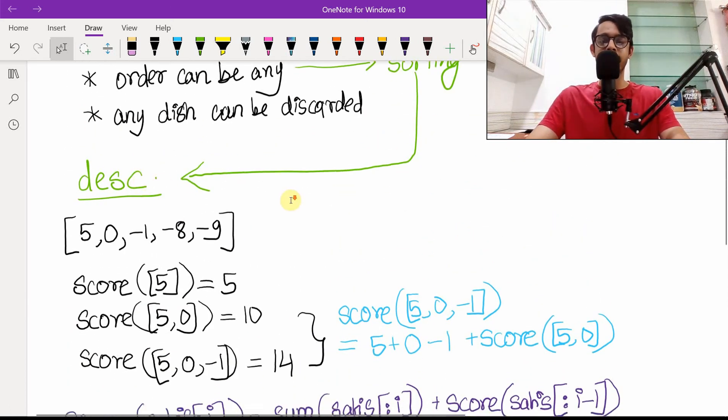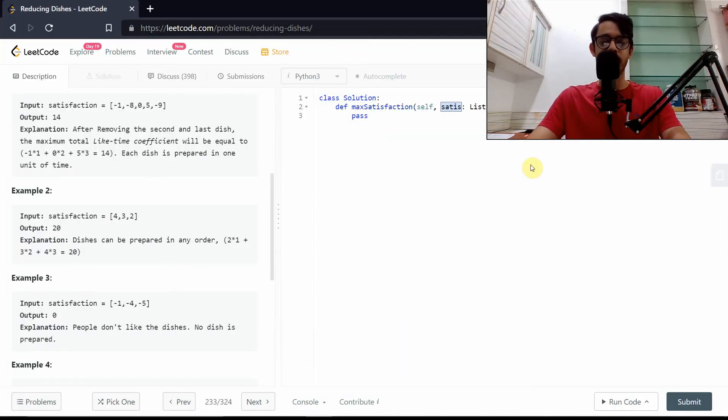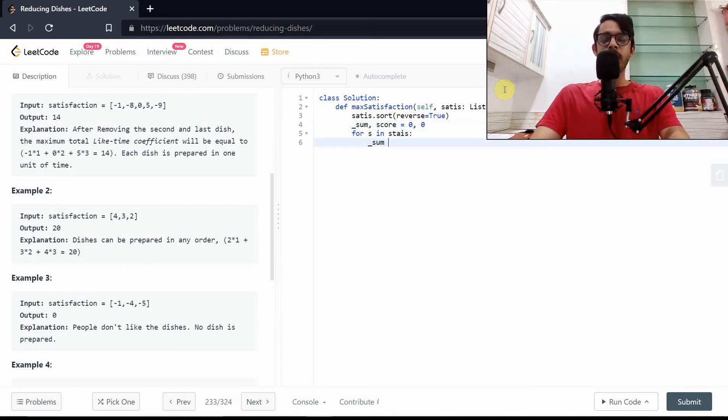First we'll sort it in descending order and then we'll do these two operations. Let's sort it in descending order so we'll set reverse as true. Iterate over all of these s in satisfaction. Before that, let's initialize sum and the total score as zero and zero. Each time we're going to include this element in the sum and each time we're going to do score plus equals sum. At the end we'll return score.